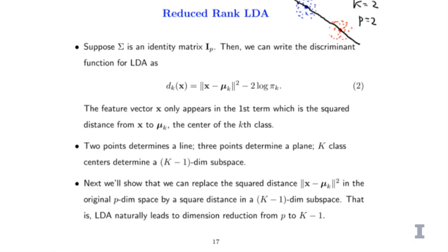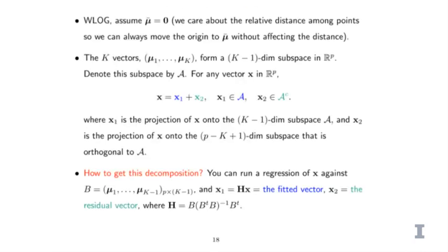Let's mathematically prove that LDA naturally leads to a dimension reduction from p to k minus one. Without loss of generality, we assume the mean of the k centers is the origin zero, because all we care about is relative distance among points, so we can always move the origin to mu-bar without affecting any distances. Then the k vectors mu_1 through mu_k, each a p-dimensional vector, form a k minus one dimensional subspace — because the k vectors sum to zero by assumption, creating redundancy, so they span at most k minus one dimensions.